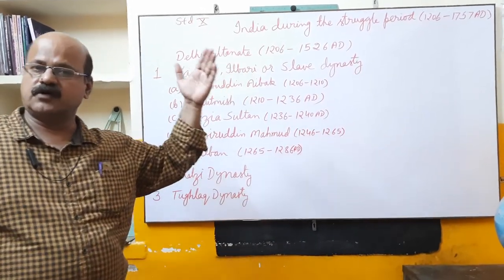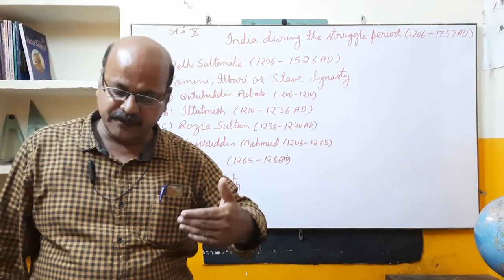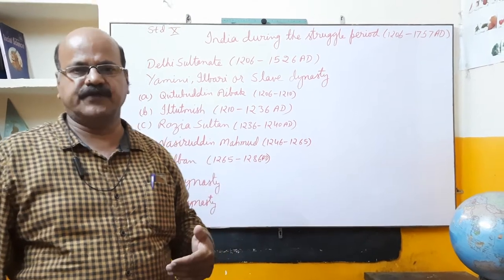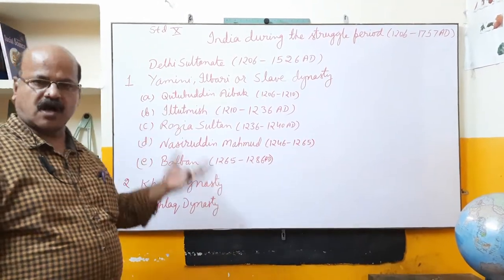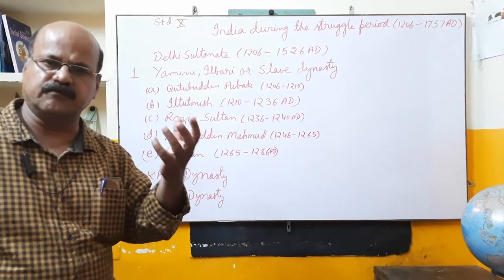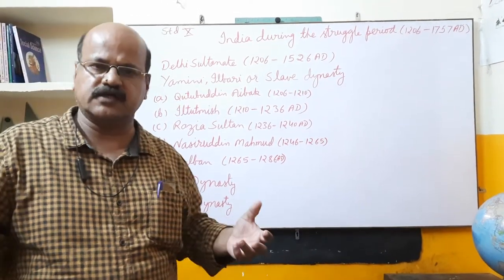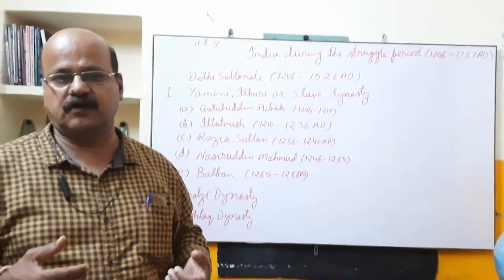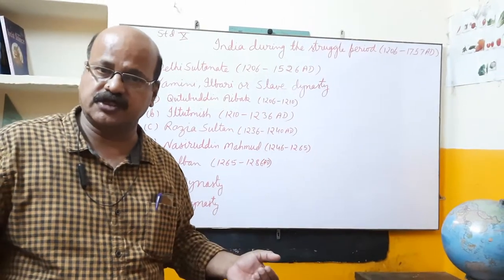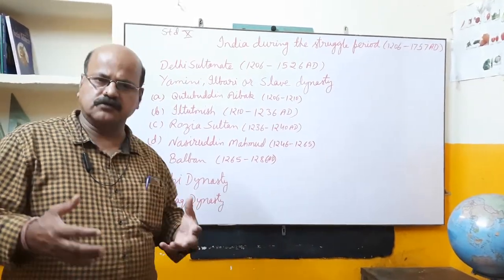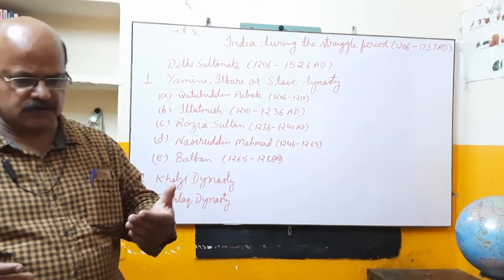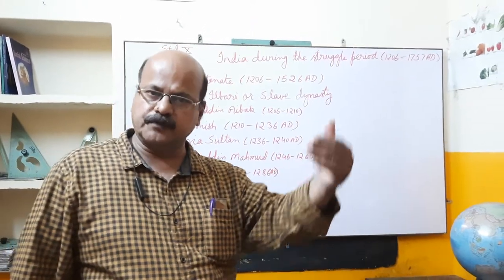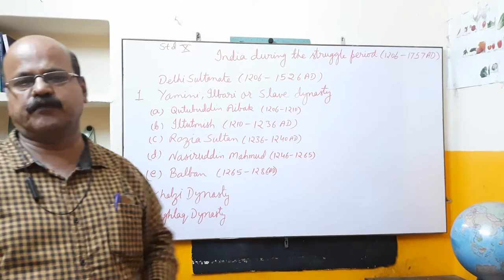Since Qutbuddin Aibak was the slave of Muhammad Ghori, the dynasty which began with him is known as the Slave dynasty. He was generous and gave large amounts in charity, so he was known as Lakh Baksh. He gave respect to literate persons, so the scholar Hasan Nizami was given the protection of his empire. He had a great interest in architecture and laid the foundation of the Qutb Minar, constructing its first storey.